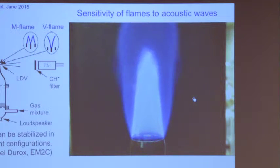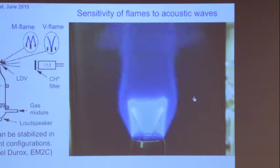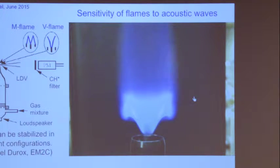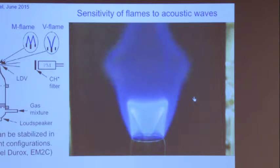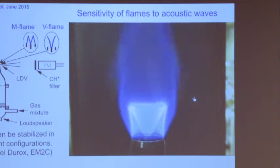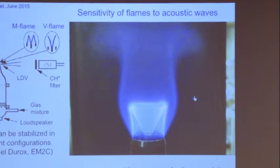We inject acoustic waves from the bottom: the conical flame is changed into an M flame, and you can see the M flame is a very strong amplifier. This must be reflected in the transfer function. This flame — the V flame — is also amplifying. The transfer function will describe this behavior and tell us what goes on.